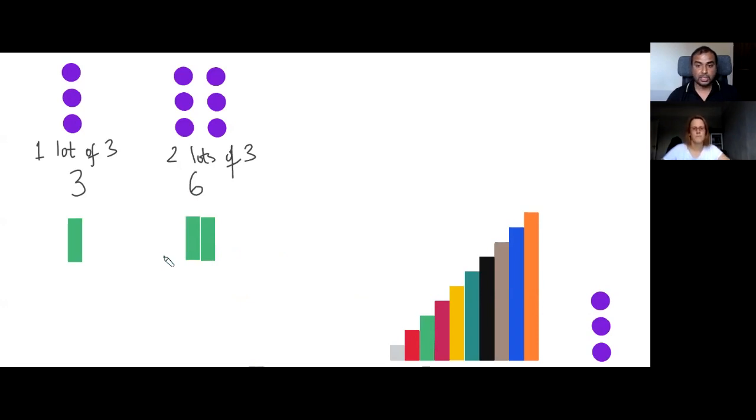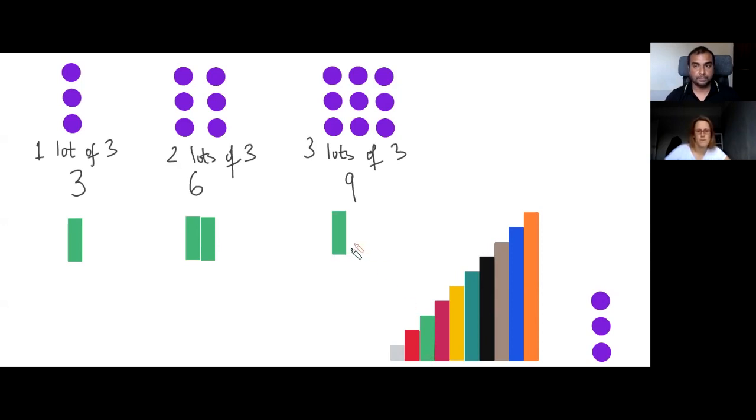Can you show me what three lots of three looks like with the dots? And that gives us a total of? A total of nine. And you can show that to me with the rods as well. Yeah. Great.